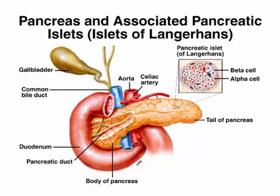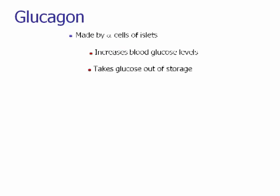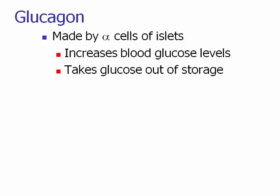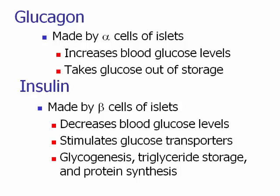The pancreatic islets have two important cell types. Alpha cells make glucagon, which increases blood glucose levels by taking glucose out of storage. Beta cells make insulin, which decreases blood glucose by stimulating glucose transporters, signaling glycogenesis (making of glycogen), triglyceride storage, and protein synthesis. After a meal, insulin is highest; when you're hungry, glucagon is highest.